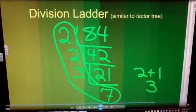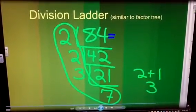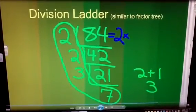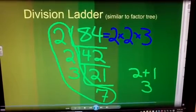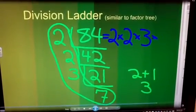So, 84 equals two times two times three times seven.